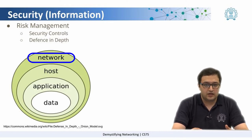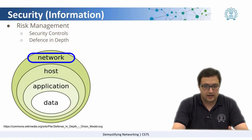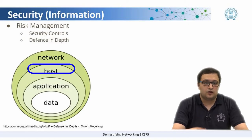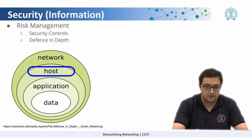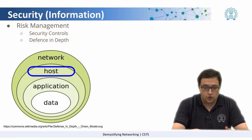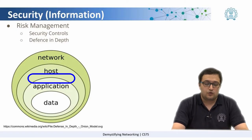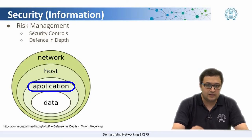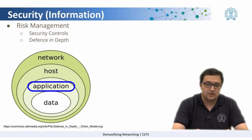For example, the network itself has to have security — any unauthorized person should not be able to enter the network. Then the host itself should be secure. If an unauthorized person is able to physically enter the building, the host itself should have security measures so that they cannot be allowed to enter the host computer. The host level security ensures that the physical system has been secured for only authorized access.